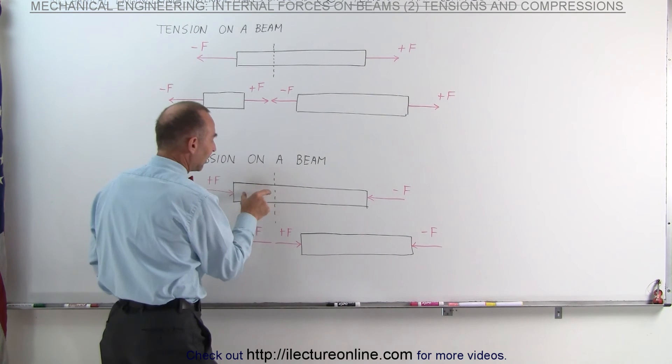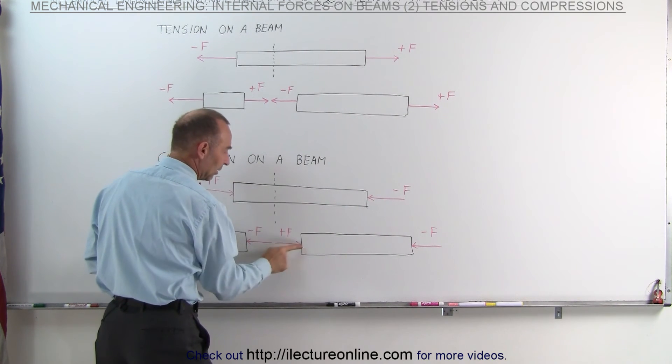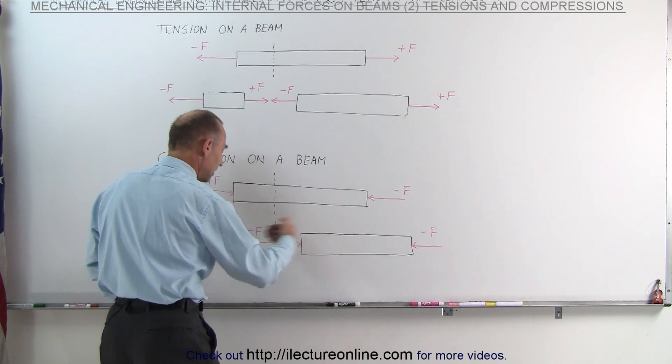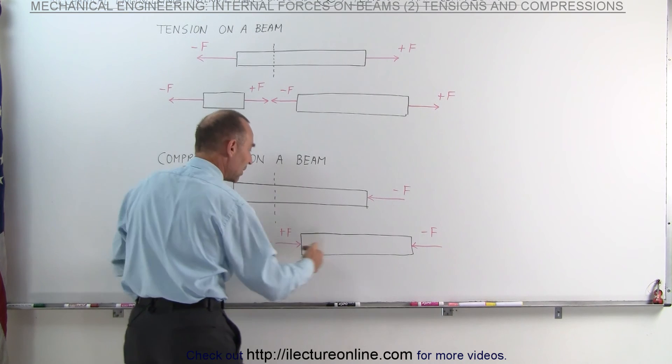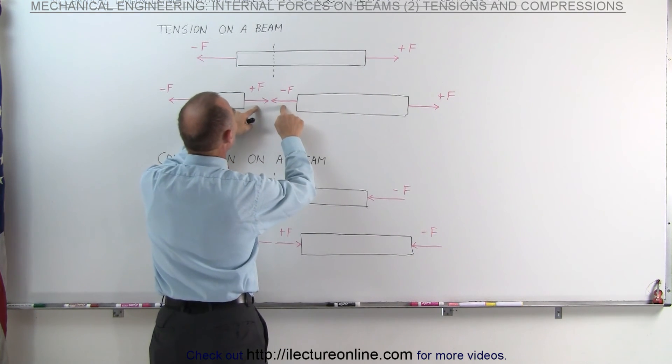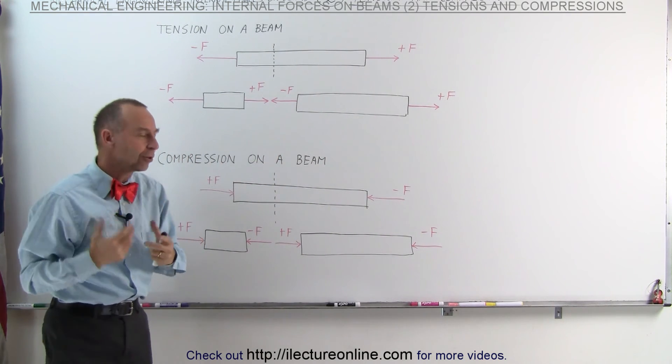And again, notice the result is that this section of the beam will be pushing against that section of the beam in this direction, and this section of the beam will be pushing against this section of the beam in this direction. So those are the internal forces inside the beam when the beam is under compression, and here are internal forces in the beam when the beam is under tension. That gives us an idea of how to look at that.